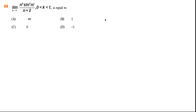In this limit as n tends to infinity, we have n raised to the power k and sine of n factorial squared, divided by n plus 2, where k lies between 0 and 1. This range is very important — the fact that k is lying between 0 and 1 is key. We will try to arrange this limit in such a way that we can easily evaluate it.